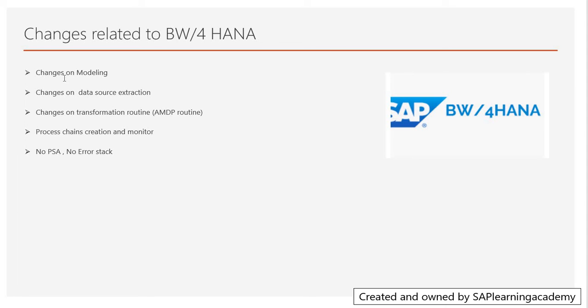There are also changes in data source extraction. In BW4HANA we have the option to extract from the source by the ODP method — the ODP provisioning method. Using this functionality, it takes data from the source, which is much faster than the earlier version and the way we used to paste data in BW.